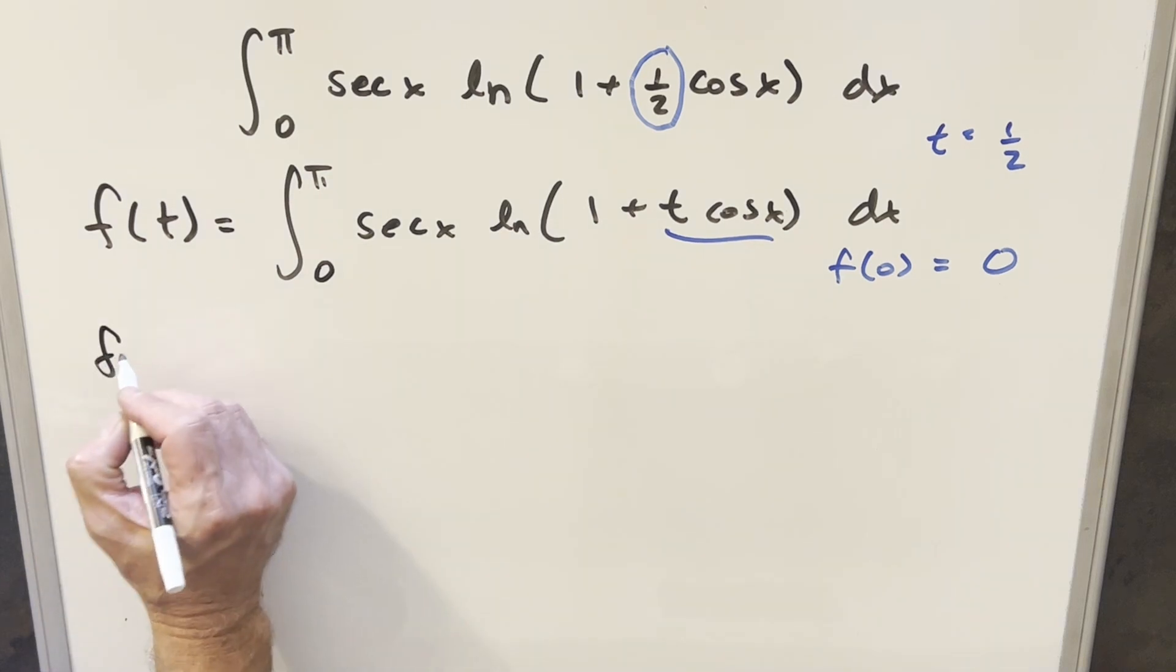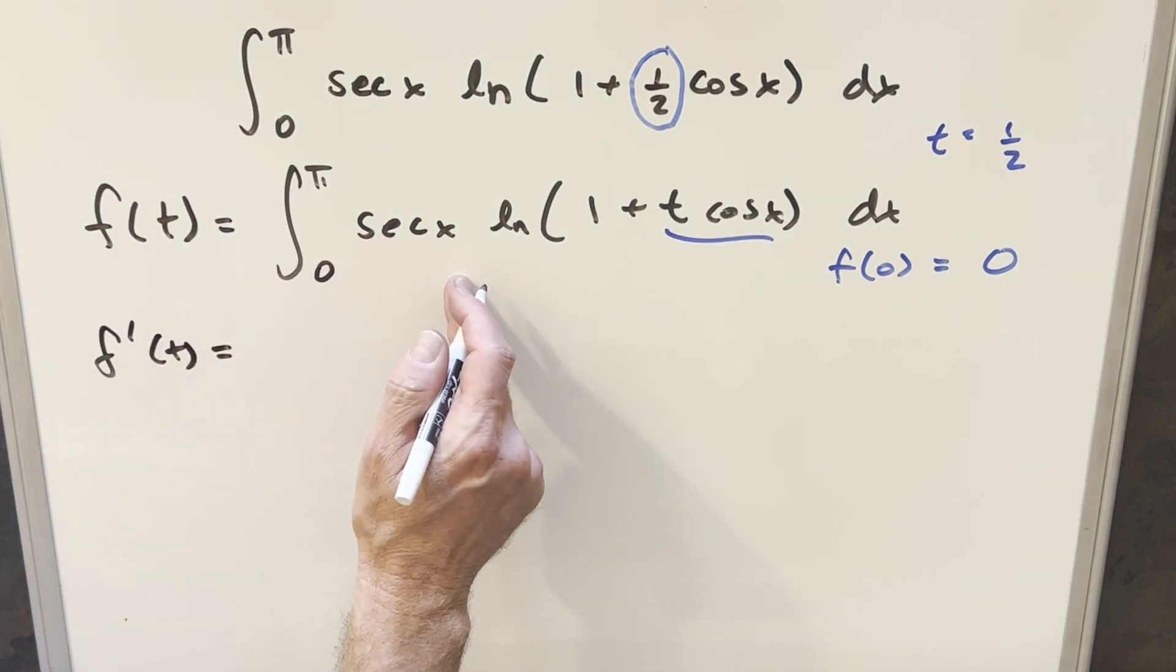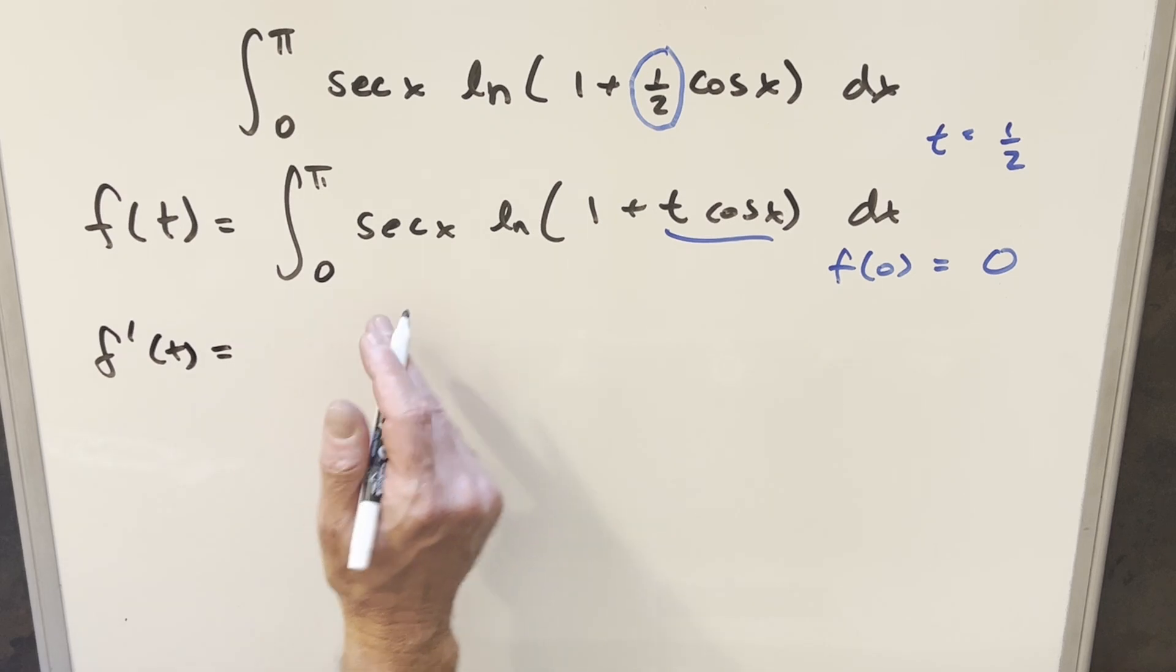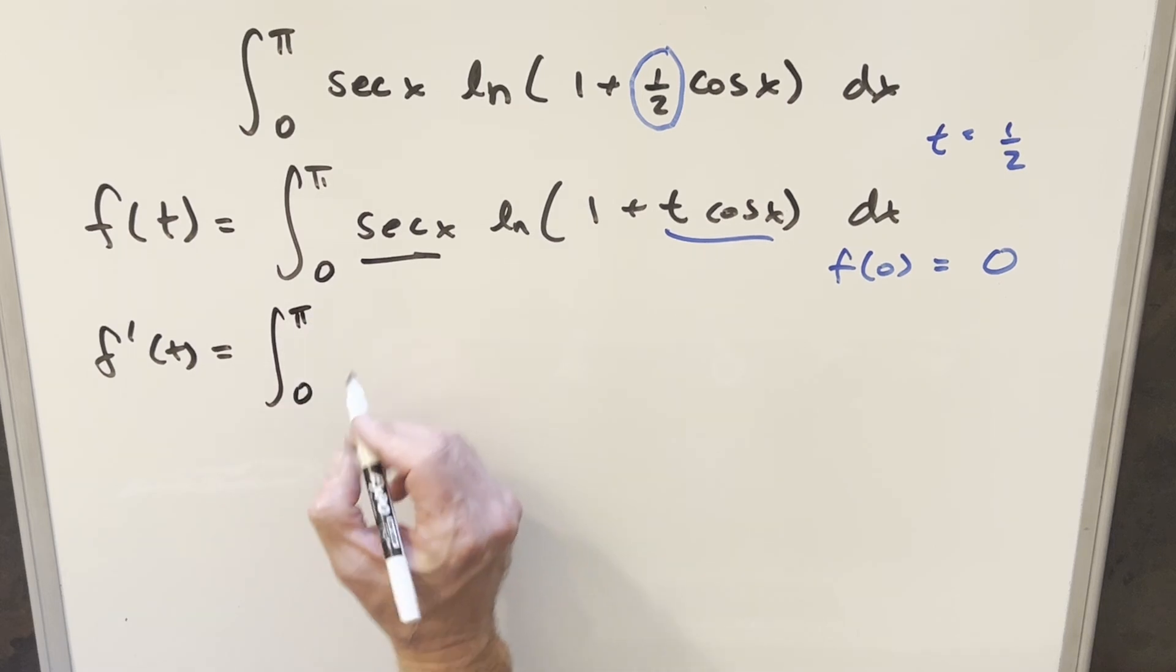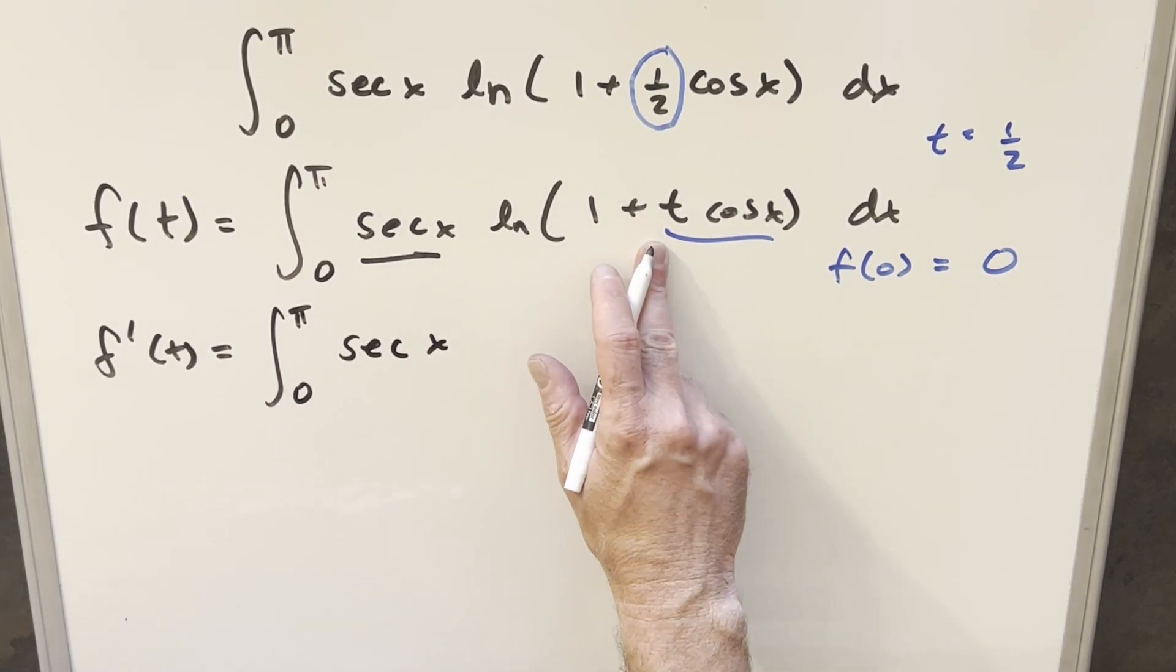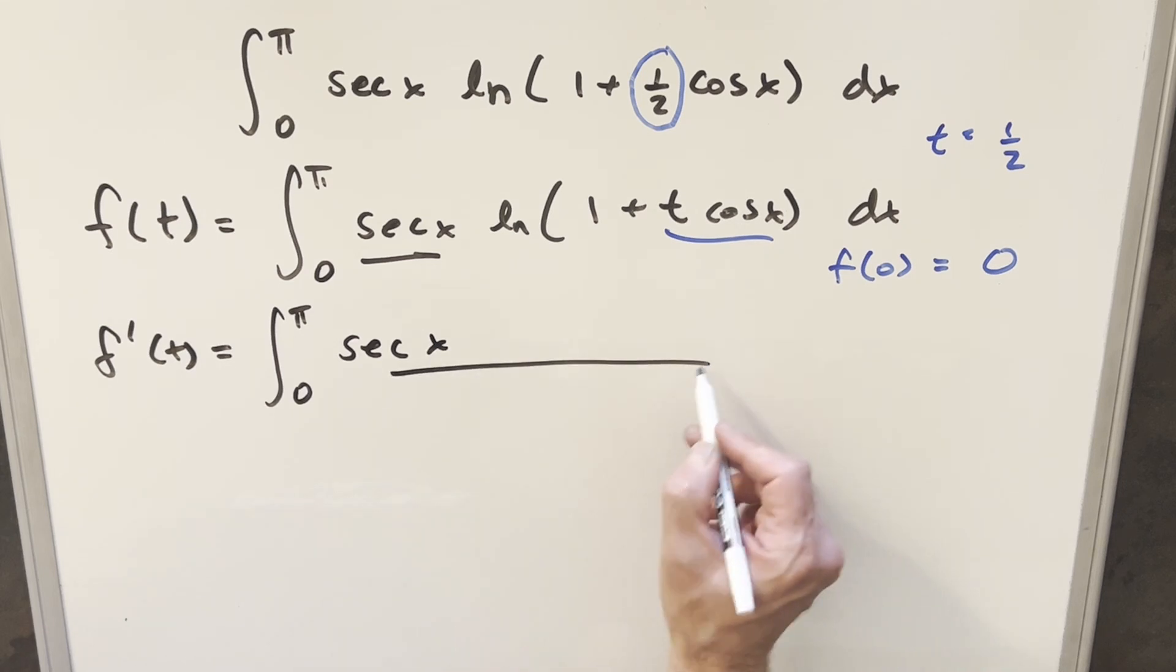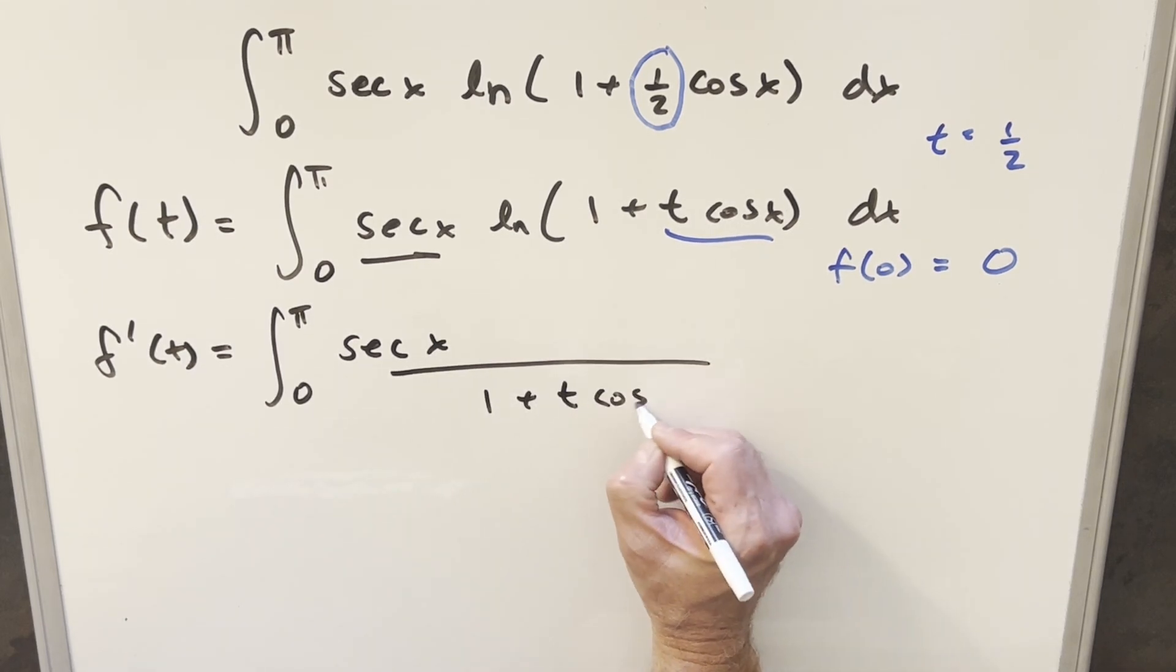So then what we want to do is we want to go ahead and integrate with respect to t as a partial that we bring in here. I'm going to kind of do this quickly on the fly because this part is just going to be a constant. So I'm just going to integrate. We have the constant that's going to come up front.